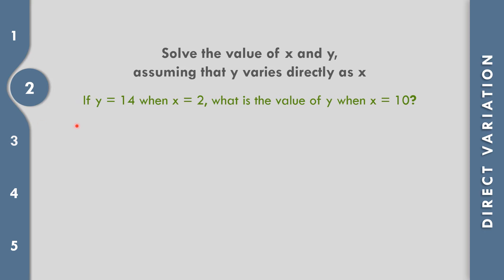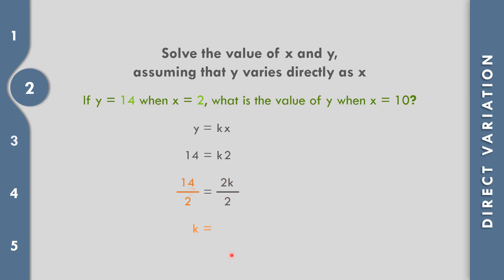How about number two? If y equals 14 when x equals 2, what is the value of y when x equals 10? Using the formula y equals k times x, we substitute: 14 equals k times 2. Dividing both sides by 2, we get 14 divided by 2 equals 7, so k equals 7. We have the constant of variation equal to 7.